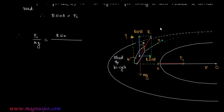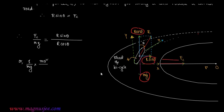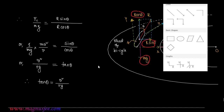Therefore Fc divided by Mg is equal to R sin theta divided by R cos theta. If we consider the forces acting in the vertical direction, then R cos theta will be equal to Mg. So therefore, 1 by Mg into Mv squared by R will be equal to sin theta divided by cos theta, or V squared by Rg is equal to tan theta. Therefore tan theta is equal to V squared divided by Rg.